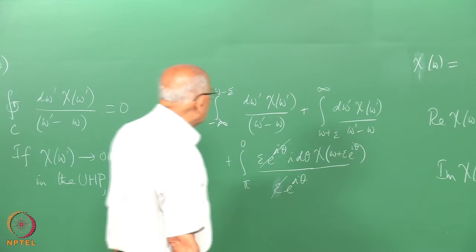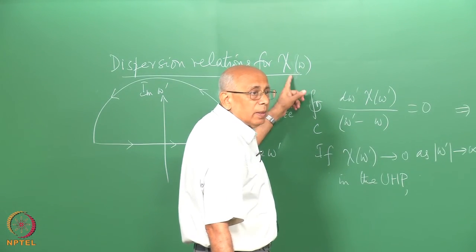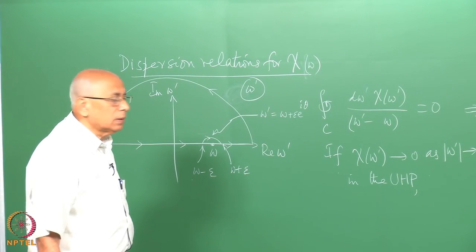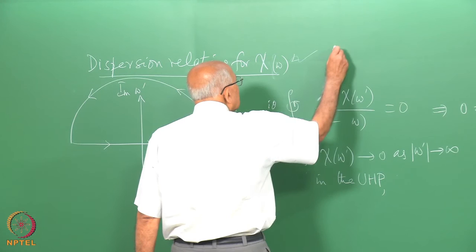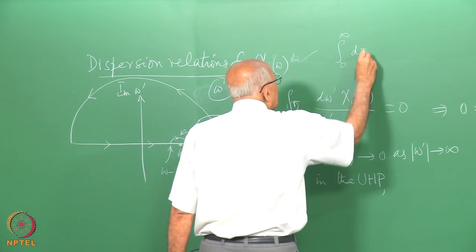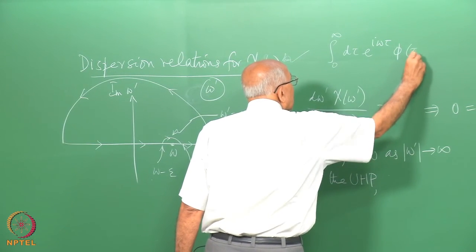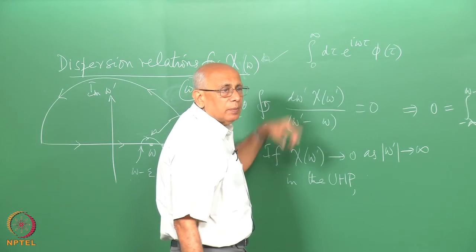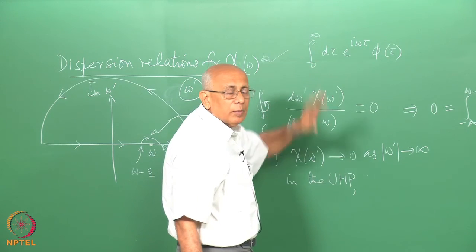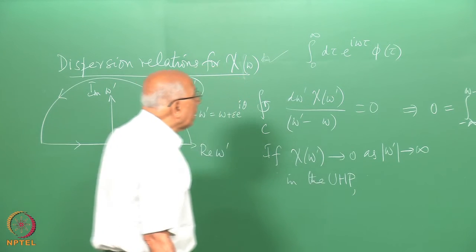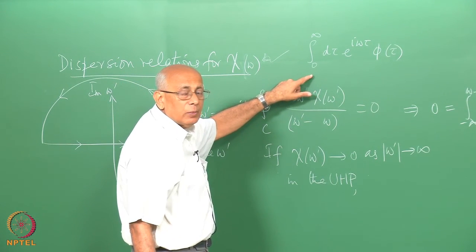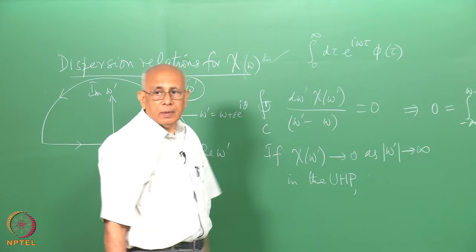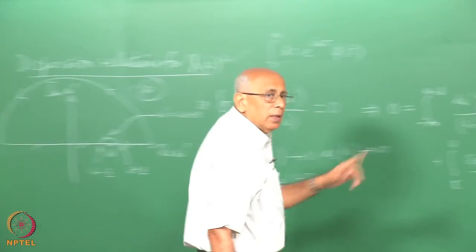Why did this whole thing happen? It happened because chi is an analytic function in the upper half plane. Where did the analyticity come from? It was represented as an integral from zero to infinity of d tau times e to the i omega tau times phi(tau) — a one-sided Fourier transform. If this is true for real omega, then for omega with positive imaginary part it is certainly true and analytic. This arose from causality: the lower limit is zero, not minus infinity. In all cases dispersion relations are a consequence of causality.